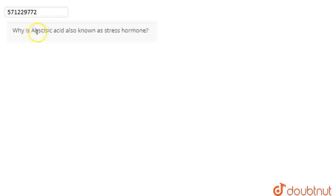If we talk about this question, in this question we are asked that why is Abscisic Acid also known as the stress hormone. So if we talk about Abscisic Acid, it is a phytohormone or a hormone that is present in plants. So, we have to discuss that why it is known as the stress hormone. So, there are a number of reasons.